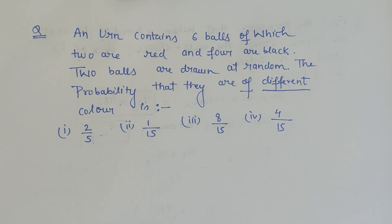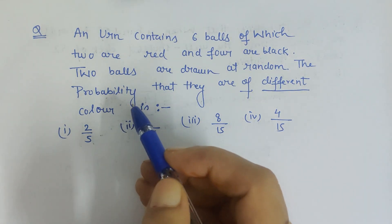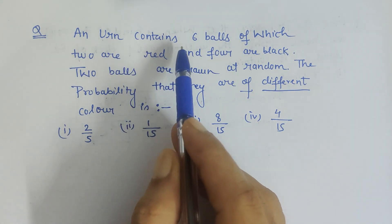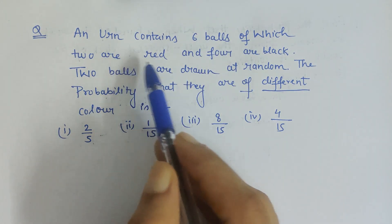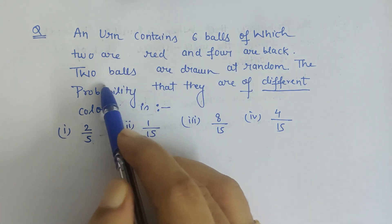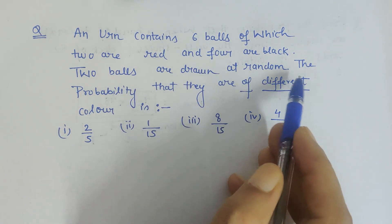Hello friends, in this video I'm going to explain a problem based on probability. An urn contains six balls, of which two are red and four are black. Two balls are drawn at random. The probability that they are of different color is what we have to calculate.